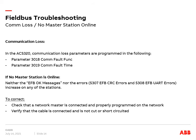What if no master station is online? Neither the EFB OK messages nor the errors found in 5307 EFB CRC errors and 5308 EFB UART errors increase on any of the stations. To correct this problem, check that a network master is connected and properly programmed on the network, and verify that the cable is connected and is not cut or short circuited.